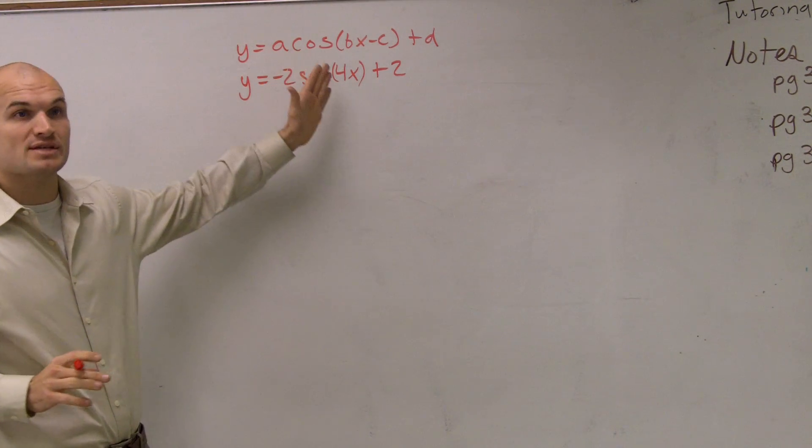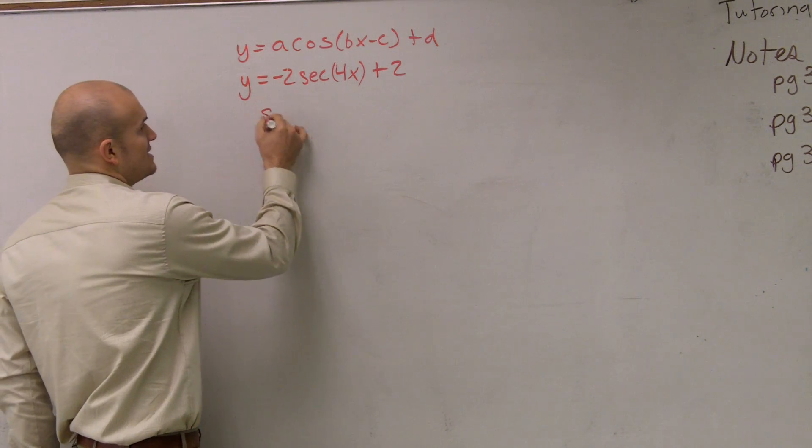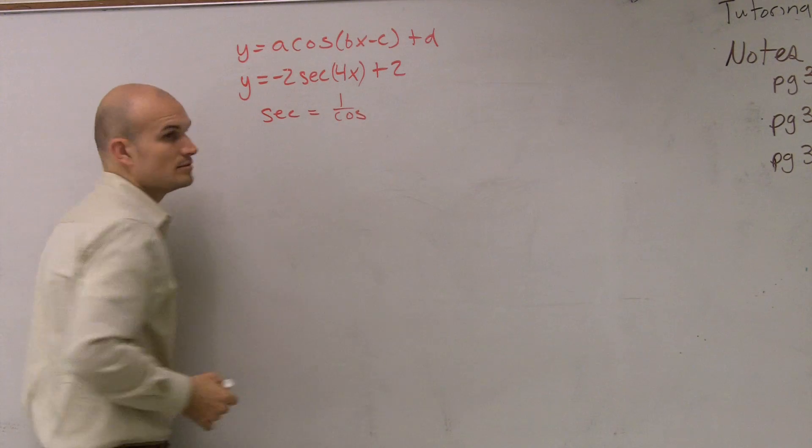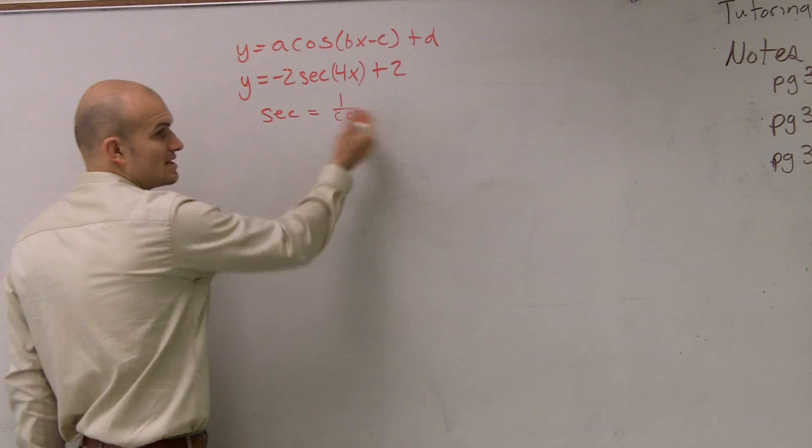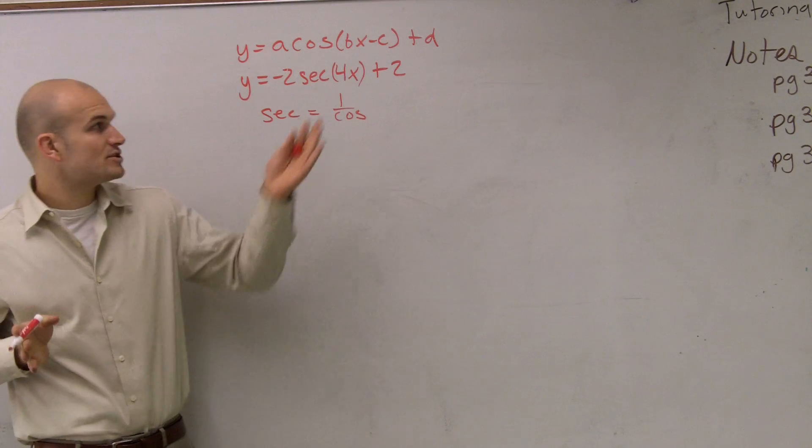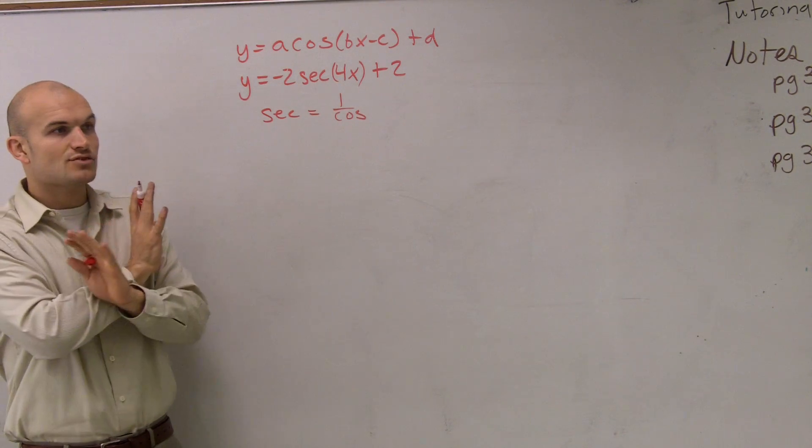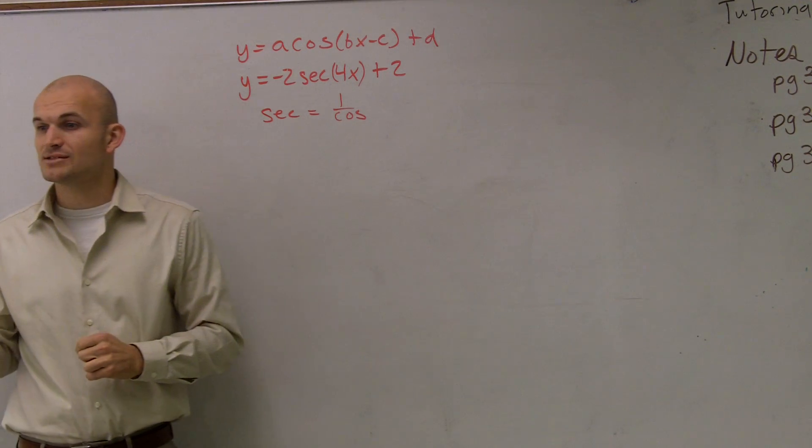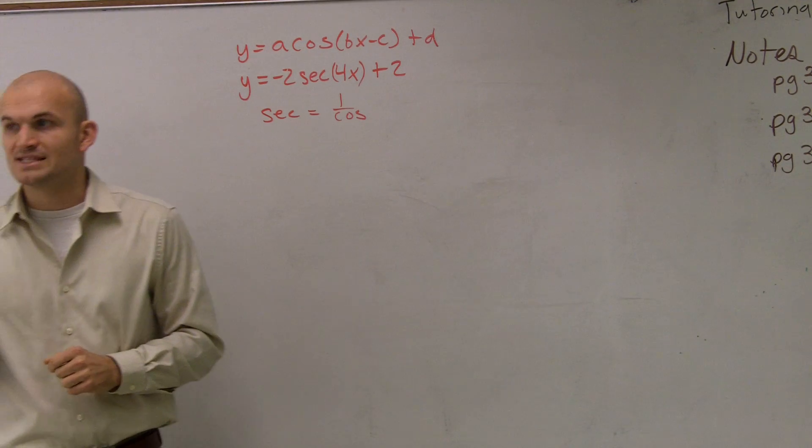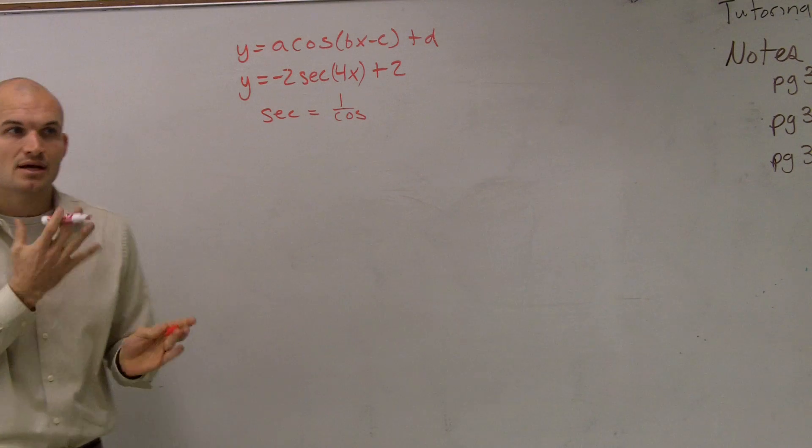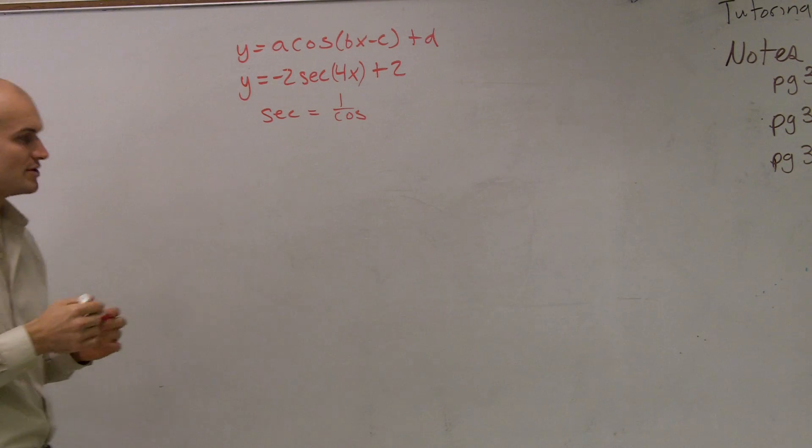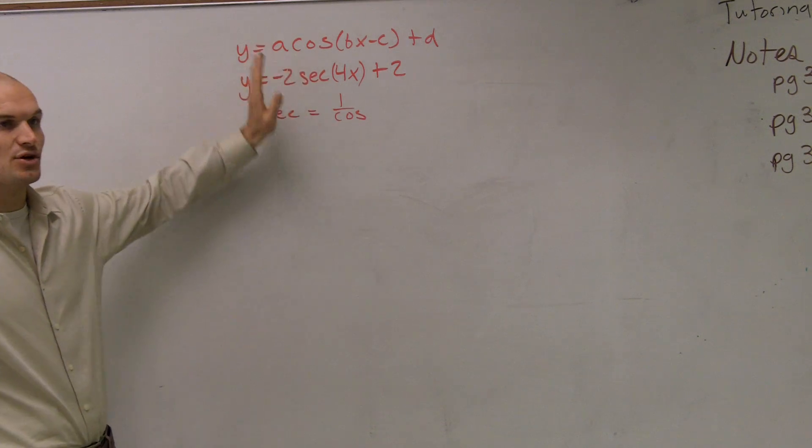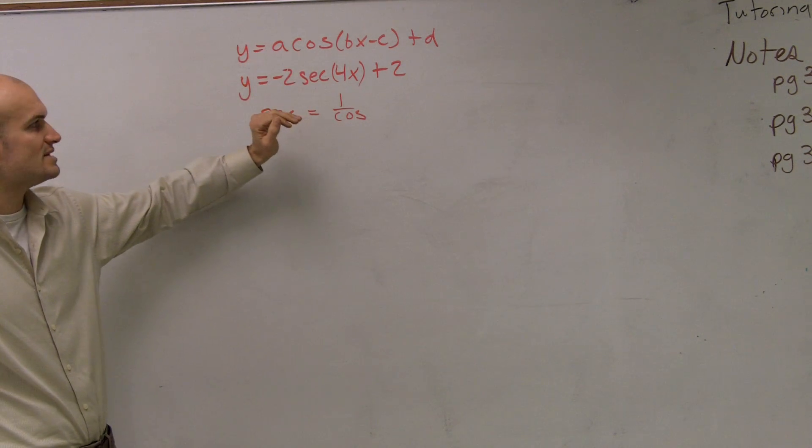If you guys can kind of just forget right now that it's a secant graph, let's just pretend it's a cosine graph. Because you should remember that secant is the same thing as 1 over cosine. So what we're going to do to help us graph our secant is let's just graph it as a cosine function, and then I'll show you how to transform it.